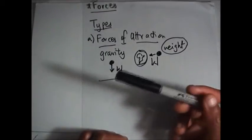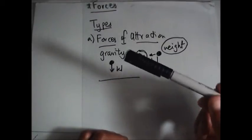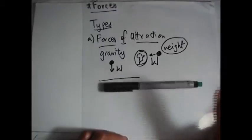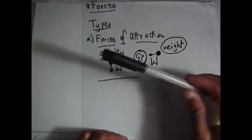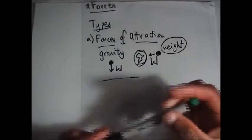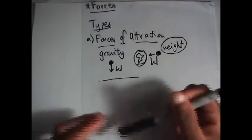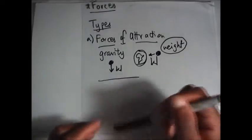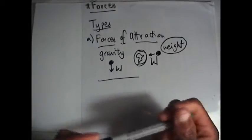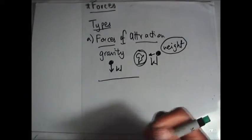Even when you throw something — I'm going to let go of this pen — it falls to the ground. That is an effect of weight. An object falls to the ground because of weight.